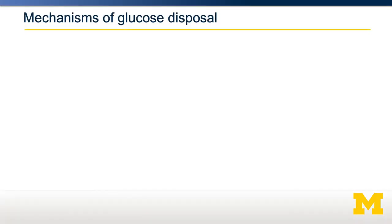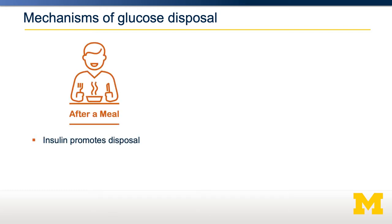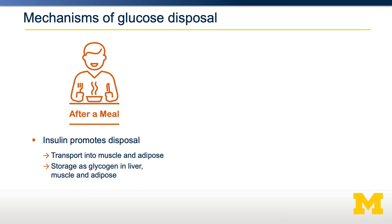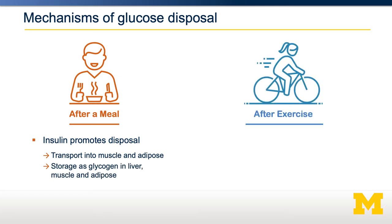So how does this happen? There are two different stimuli that can promote glucose disposal. After a meal, glucose stimulates the release of the hormone insulin from the pancreas. Insulin then drives the transport of glucose into muscle and adipose tissue. Insulin also promotes the storage of glucose as glycogen. Another mechanism by which glucose disposal is promoted is through exercise. In this case, an energy demand promotes the transport of glucose into muscle tissue.